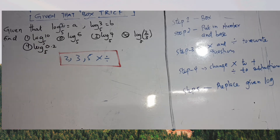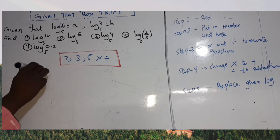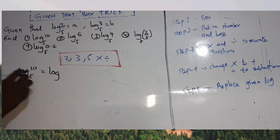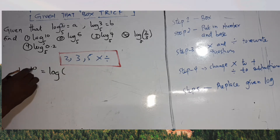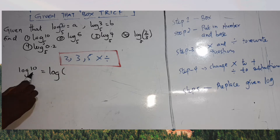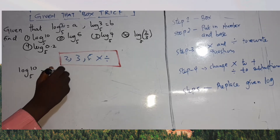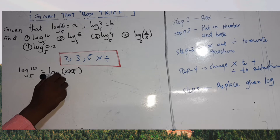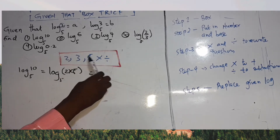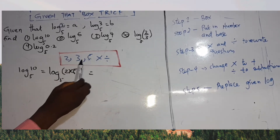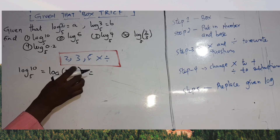First question: find log base 5 of 10. I need to rewrite 10 using numbers from the box with multiplication or division. I know 2 times 5 equals 10, so I write log base 5 of (2 × 5). Step 3 is rewriting, step 4 is changing the signs — multiplication becomes addition — so I remove the bracket and change the sign.